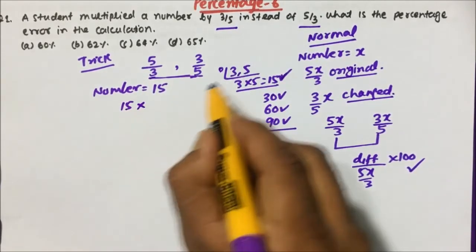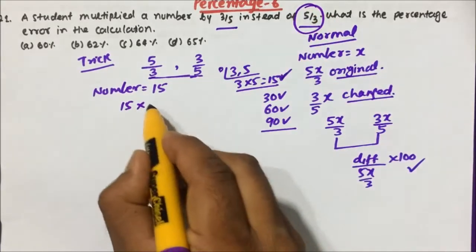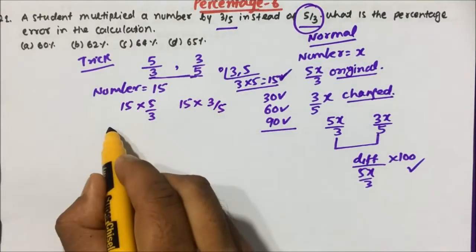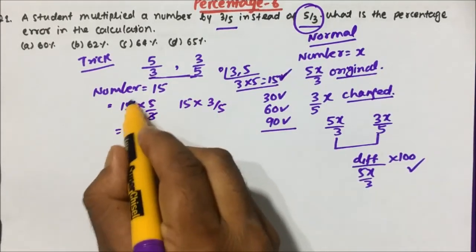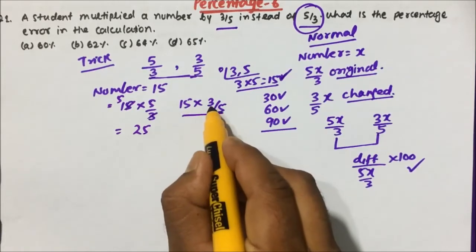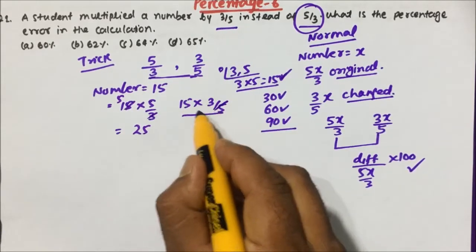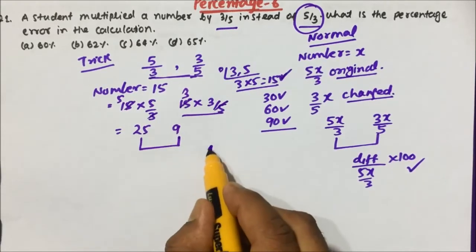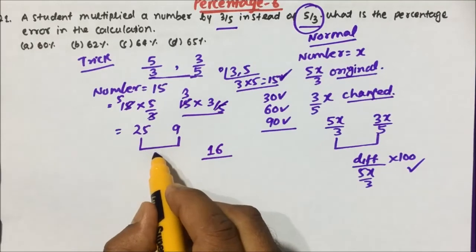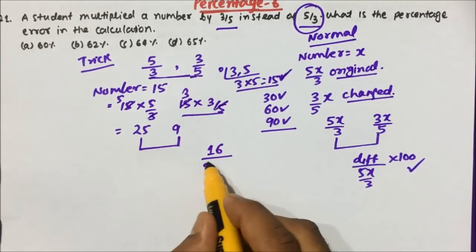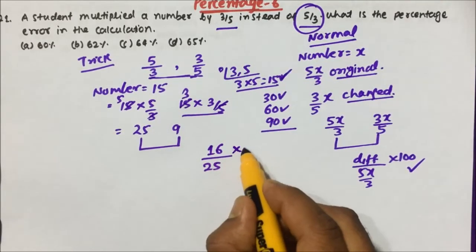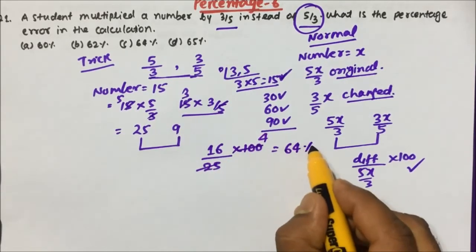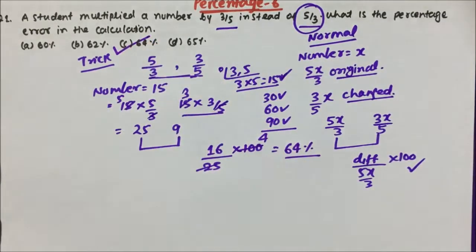Taking the number as 15: the student had to multiply by 5/3, giving 15 × 5/3 = 25 as the original value. But by mistake the student multiplied by 3/5, getting 15 × 3/5 = 9. The student is getting 16 less than the original 25. To calculate the percentage error: 16/25 × 100 = 64 percent. So the error was 64 percent.